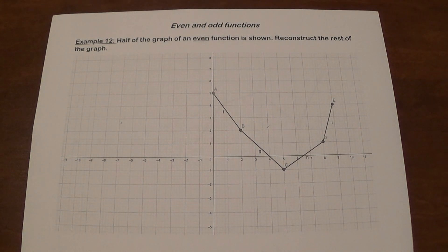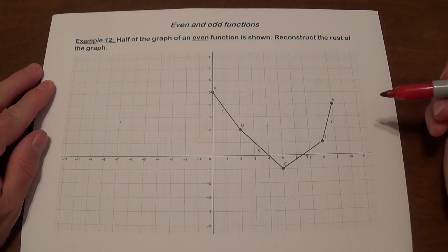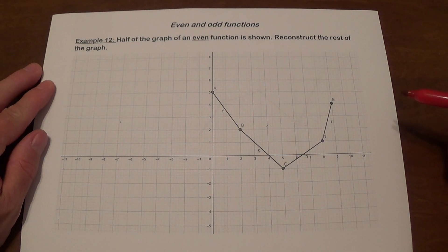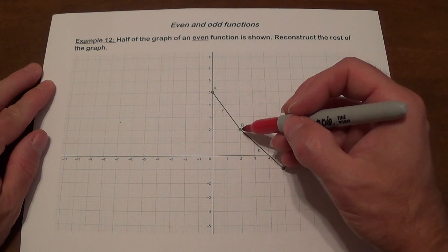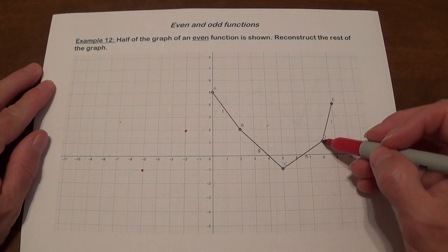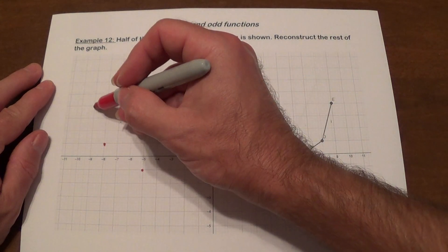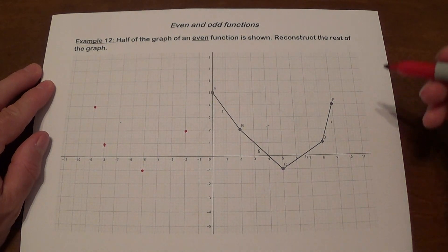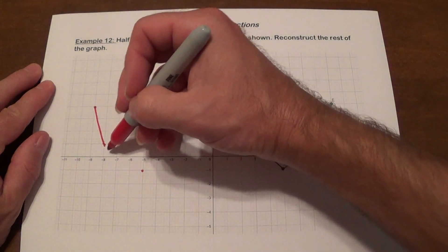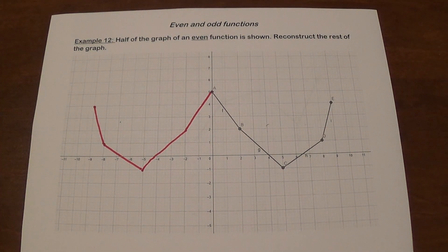The last few examples show how, if you know half the graph of an even or odd function, you can construct the rest of it. For the even function, since it's symmetric with respect to the y-axis, we simply reflect each point. The point at the origin stays. Points move over symmetrically: a point at 5 goes to negative 5, a point at 8, 1 goes to negative 8, 1, and a point at 9, 4 goes to negative 9, 4. Then you connect them in the same manner, giving the full graph — symmetric with respect to the y-axis.